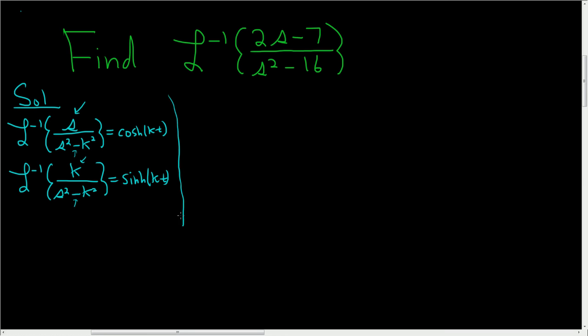So how do I know to use these in this problem? Well, if you break this up as 2s over s squared minus 16 minus 7 over s squared minus 16, you'll see that these formulas readily apply. Let's go ahead and do that.